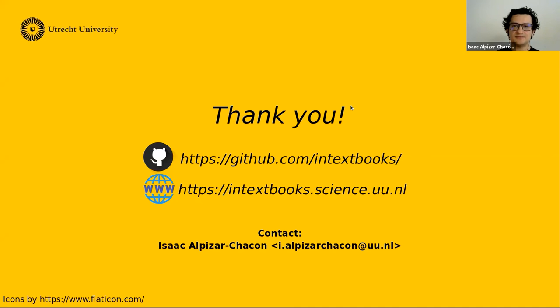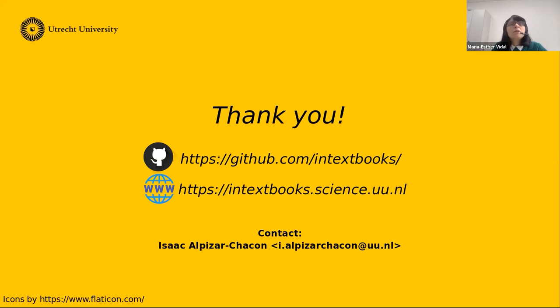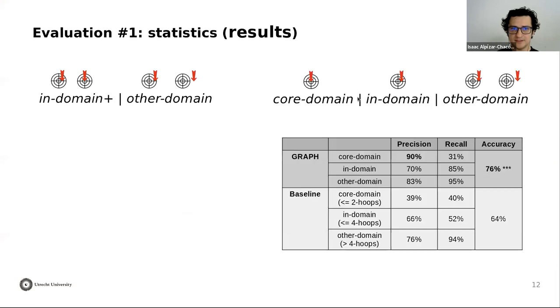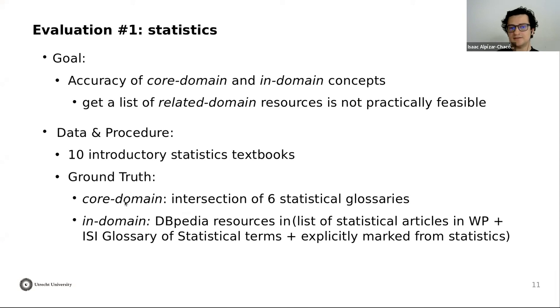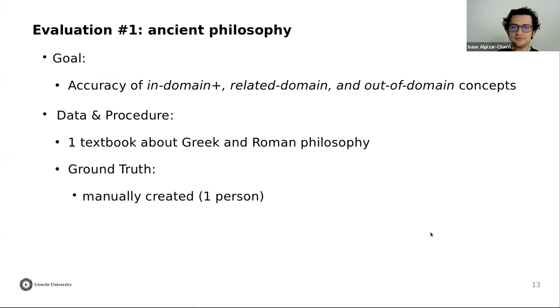Thank you for listening. I am open to any questions. A question from the chat: have you manually annotated your data to compute the accuracy? For the statistics domain, the annotation was done automatically — we intersected six statistical glossaries and used the list of statistical articles available in Wikipedia. For the ancient philosophy domain, yes, we annotated the data manually. And it's important to say that these ground truths are available online and can be reused for other approaches.